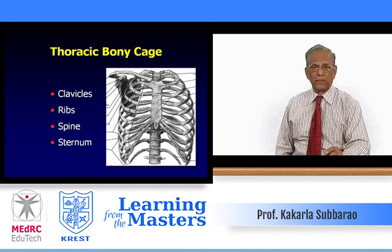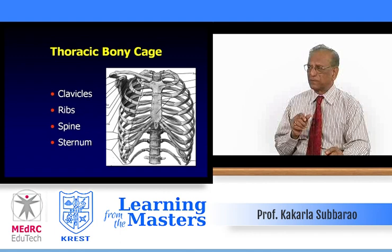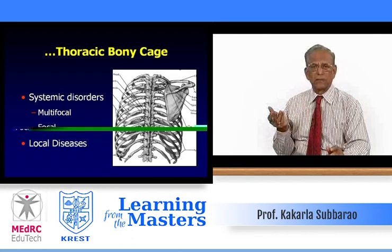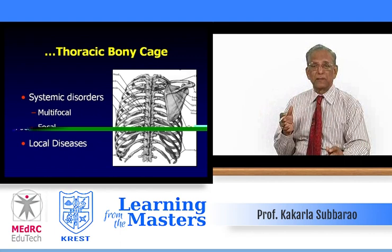Now we come to the thoracic bone cage. The structures include clavicles, ribs, spine, and sternum. Why should we look at the bone cage in a chest film? Because several systemic disorders reflect on the bone cage — sometimes on the ribs, sometimes on the sternum, sometimes on the clavicles. It is important to look at the bones before proceeding to look at the lungs and pleura.